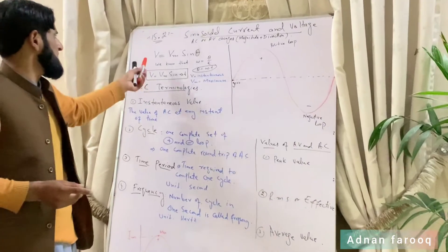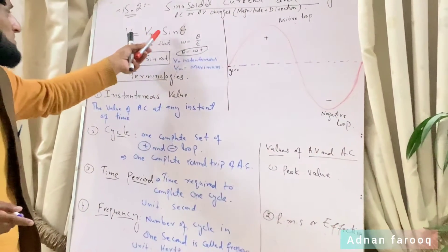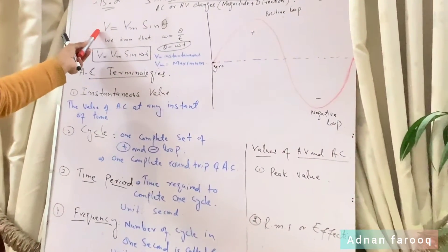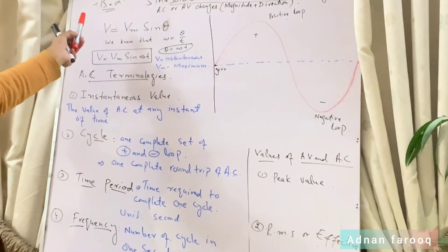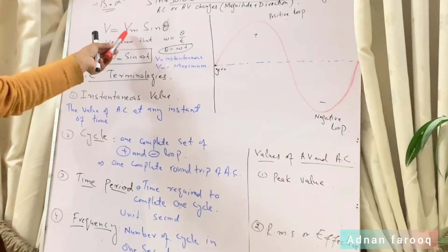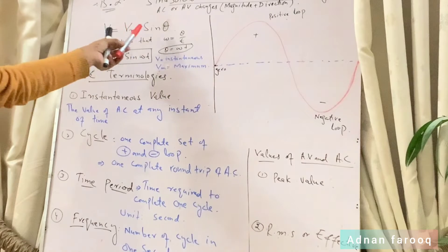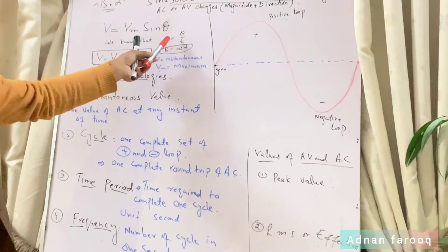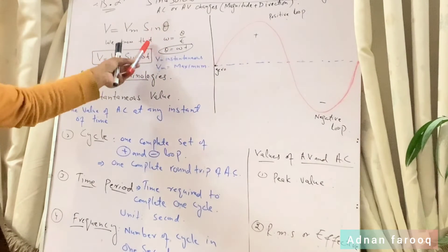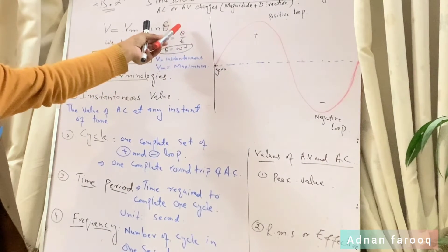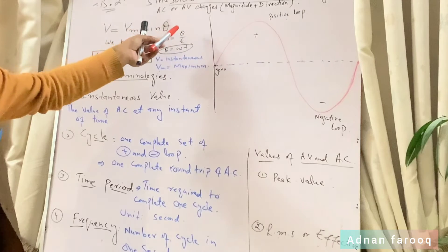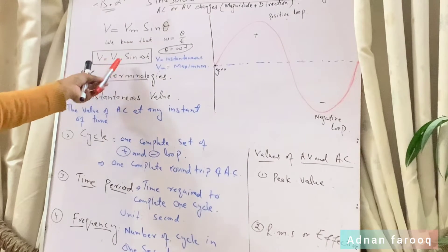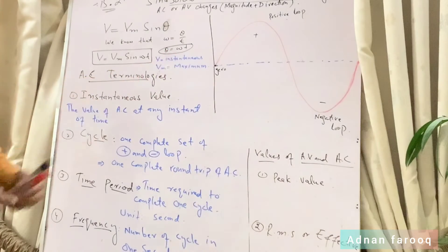Sinusoidal کی equation: V = Vm sin θ۔ V is the instantaneous voltage — کسی خاص point کا voltage — Vm is the maximum voltage, sin θ کیونکہ sine wave بنا رہا ہے۔ Theta کی جگہ ωt آتا ہے: omega is the angular velocity, ω = θ/t, so θ = ωt۔ Therefore V = Vm sin(ωt), where V is instantaneous voltage and Vm is maximum voltage۔